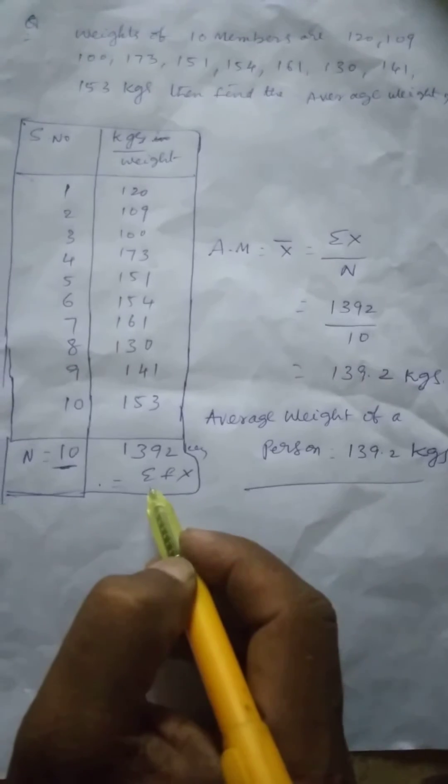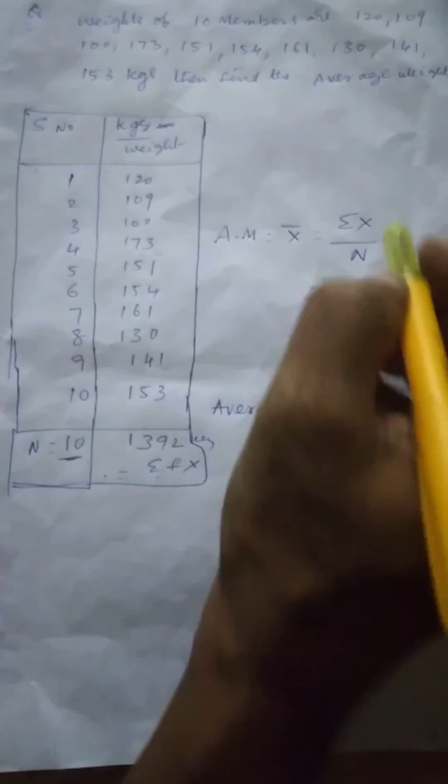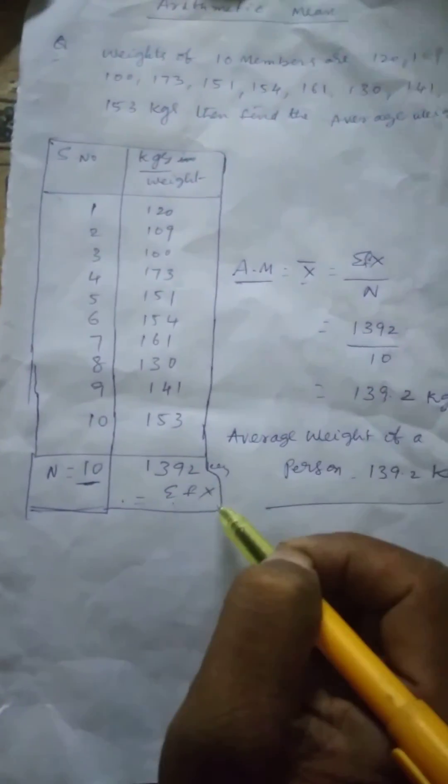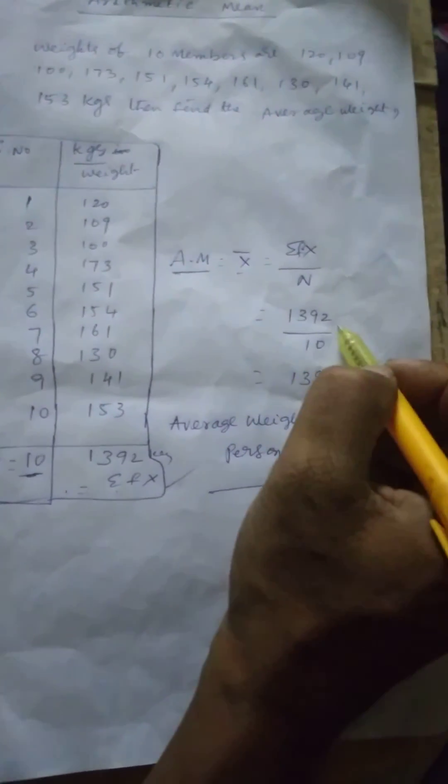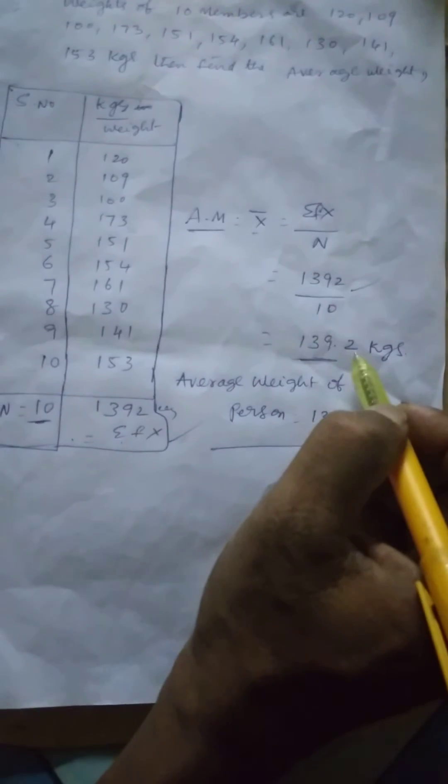So this is Sigma X. Sigma X. So here, arithmetic mean, X bar, equal to Sigma X by N. Sigma X is 1392 by 10, equal to 139.2 kg.